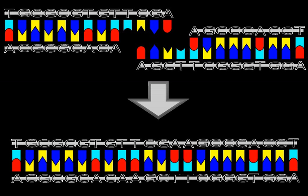Blunt end ligation does not involve base pairing of the protruding ends, so any blunt end may be ligated to another blunt end. Blunt ends may be generated by restriction enzymes such as SmaI and EcoRV. A major advantage of blunt end cloning is that the desired insert does not require any restriction sites in its sequence, as blunt ends are usually generated in a PCR, and the PCR-generated blunt-ended DNA fragment may then be ligated into a blunt-ended vector generated from restriction digest. Blunt end ligation, however, is much less efficient than sticky end ligation — typically the reaction is 100x slower. Since blunt ends do not have protruding ends, the ligation reaction depends on random collisions between the blunt ends and is consequently much less efficient.